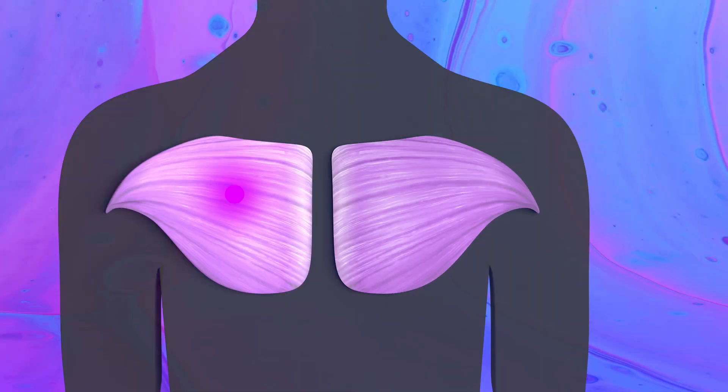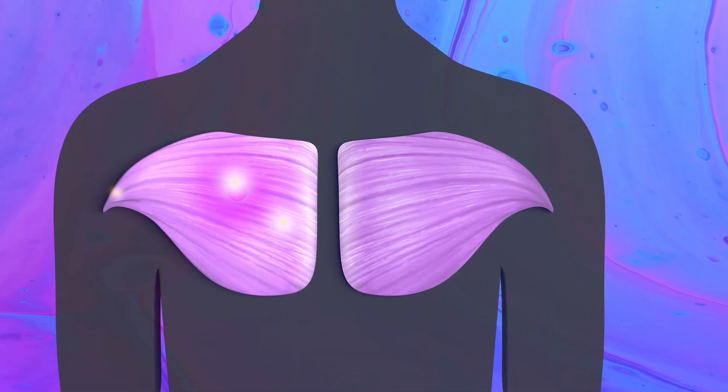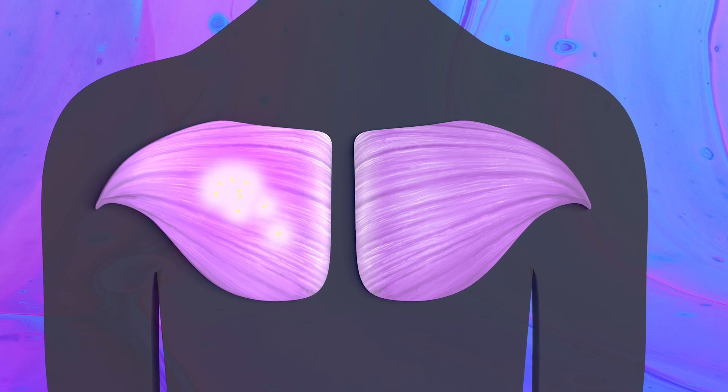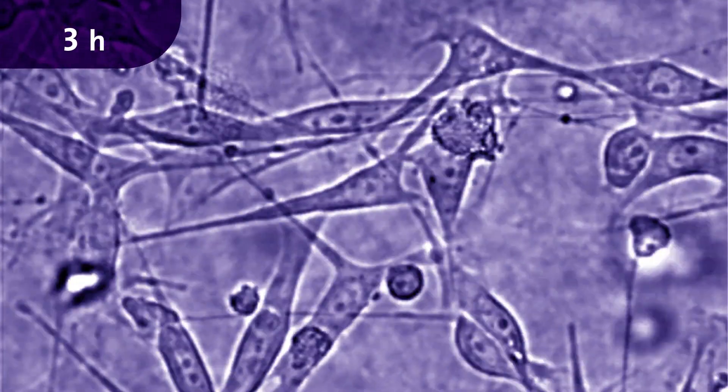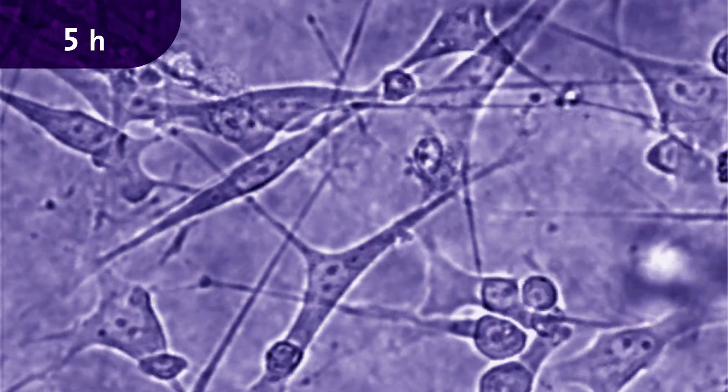The immunological tumor defense is particularly successful when T cells cooperate at high cell density. This is known as an immunologically hot tumor. Here, a swarm of T cells is busy with a network of tumor cells in tissue culture.